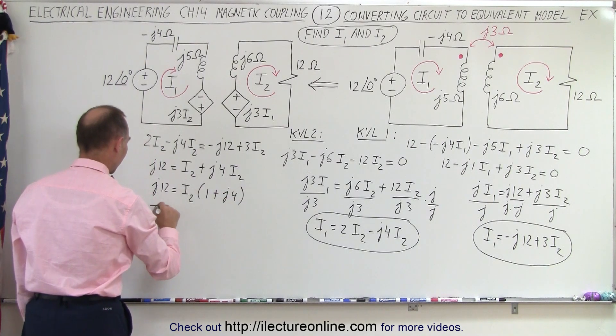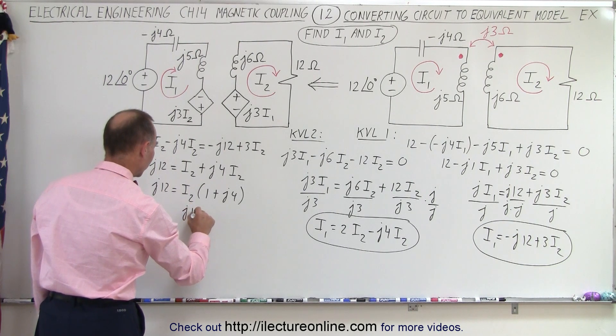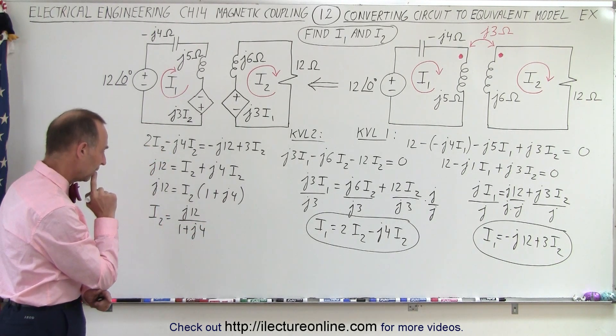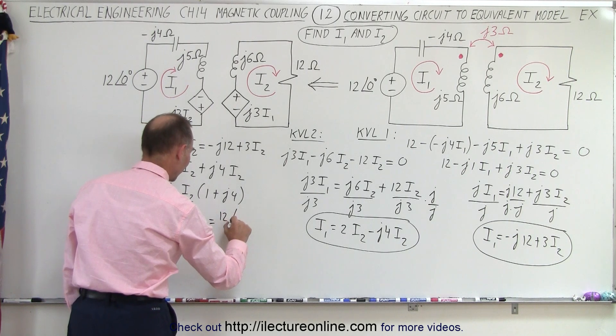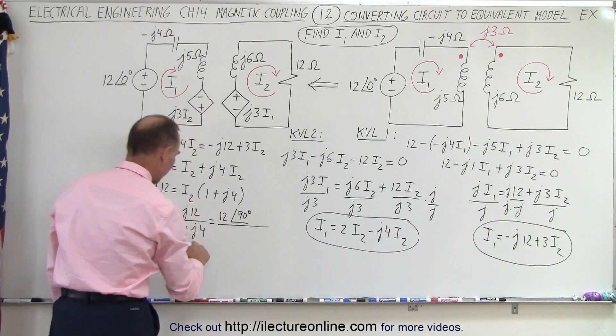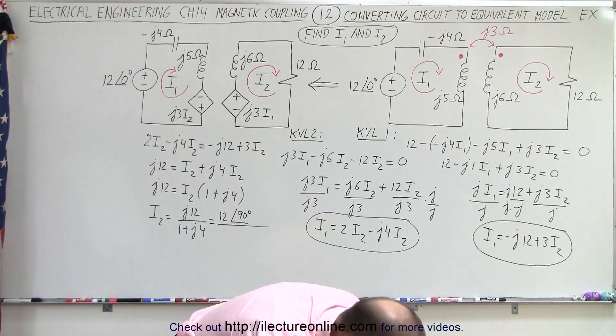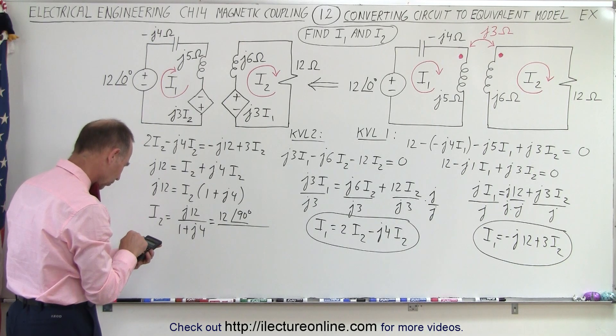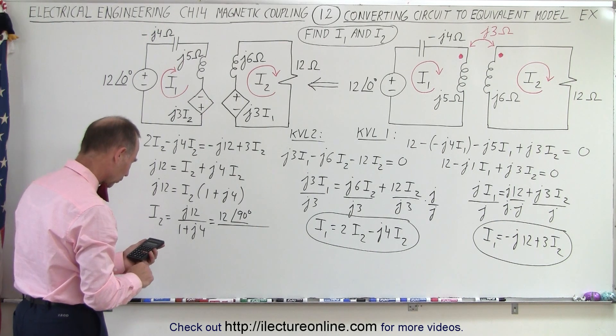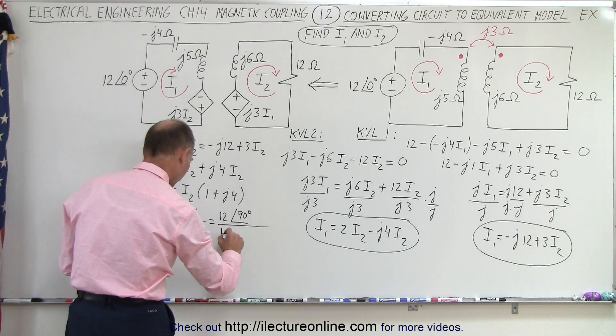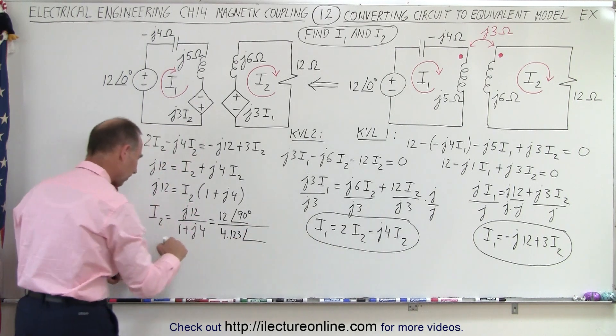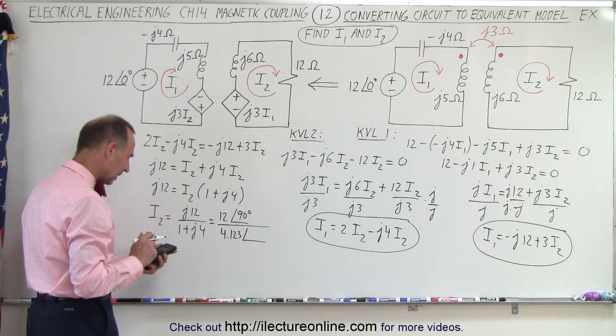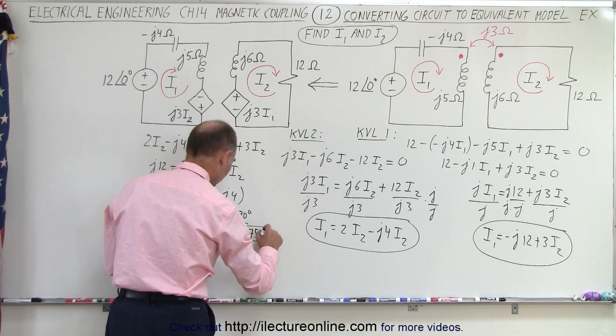So now we can isolate I2. So we can say that J12 is equal to I2 times 1 plus J4. And finally, I2 is equal to J12 divided by 1 plus J4. And let's see how we can figure that out. This is equal to 12 with a phase angle of 90 degrees divided by here. Let me need a calculator. Where did I leave my calculator? Here it is. My trusted calculator. So we have 16 plus 1, that's 17. Take the square root of that, that's 4.123. So that's 4.123 with a phase angle of 4 divided by 1. So 4, take the inverse tangent. That gives us 75.96 degrees.